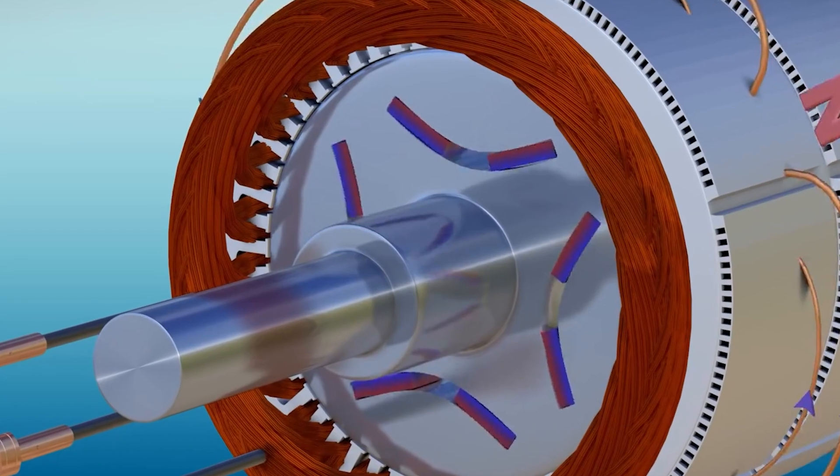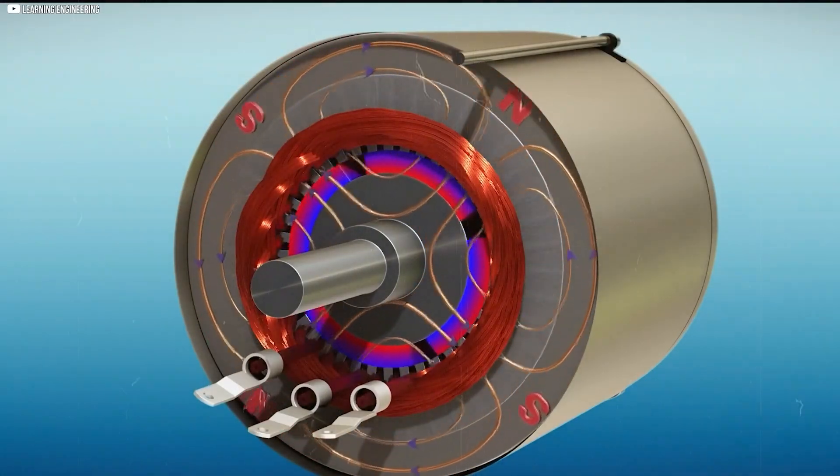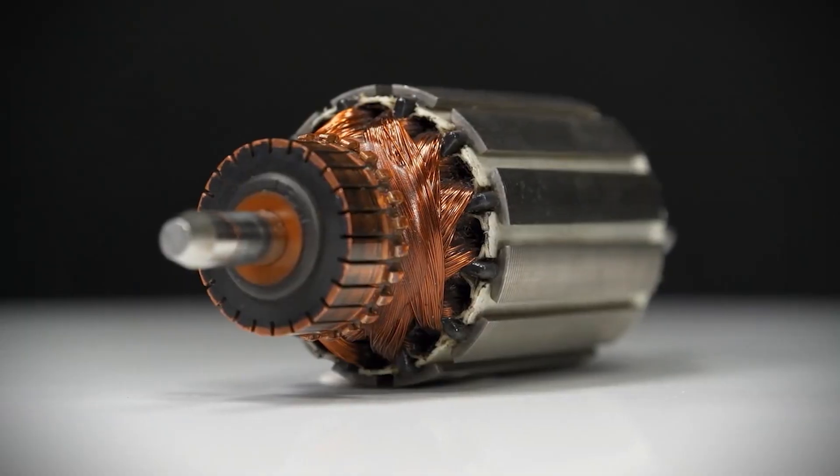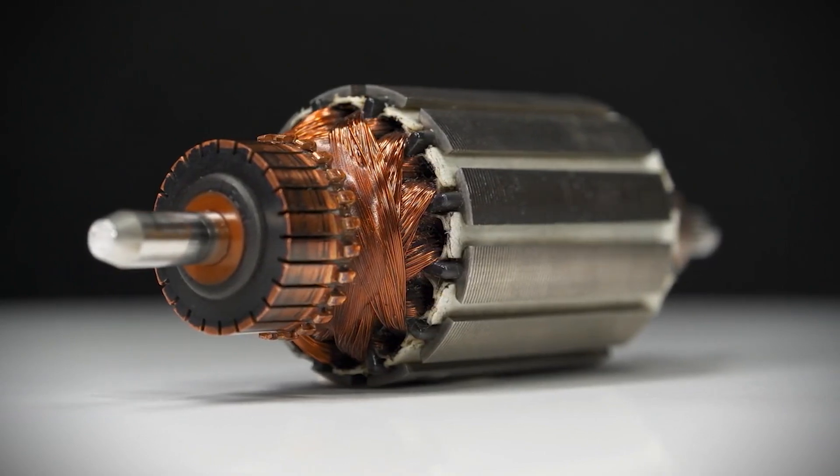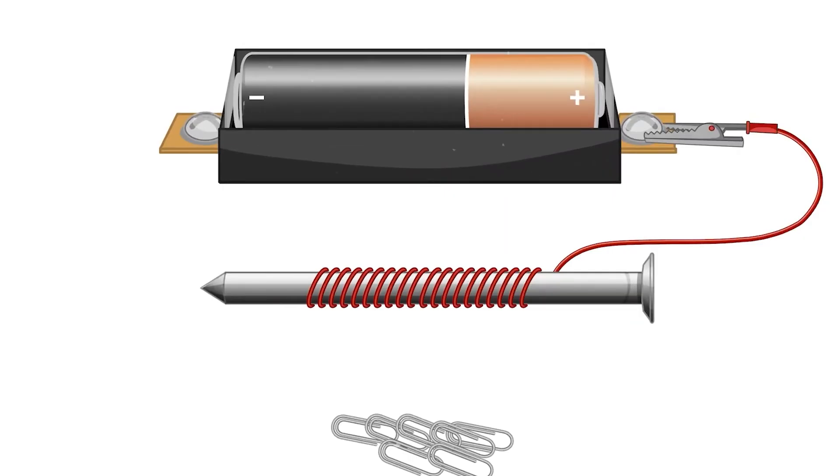This is where a component called the commutator comes in. A commutator is a special ring attached to the armature, the rotating part of the motor. The commutator works by constantly reversing the direction of the current as the armature spins. This ensures that the electromagnet's poles switch every time it reaches the halfway point of a full rotation, keeping the motor spinning continuously.